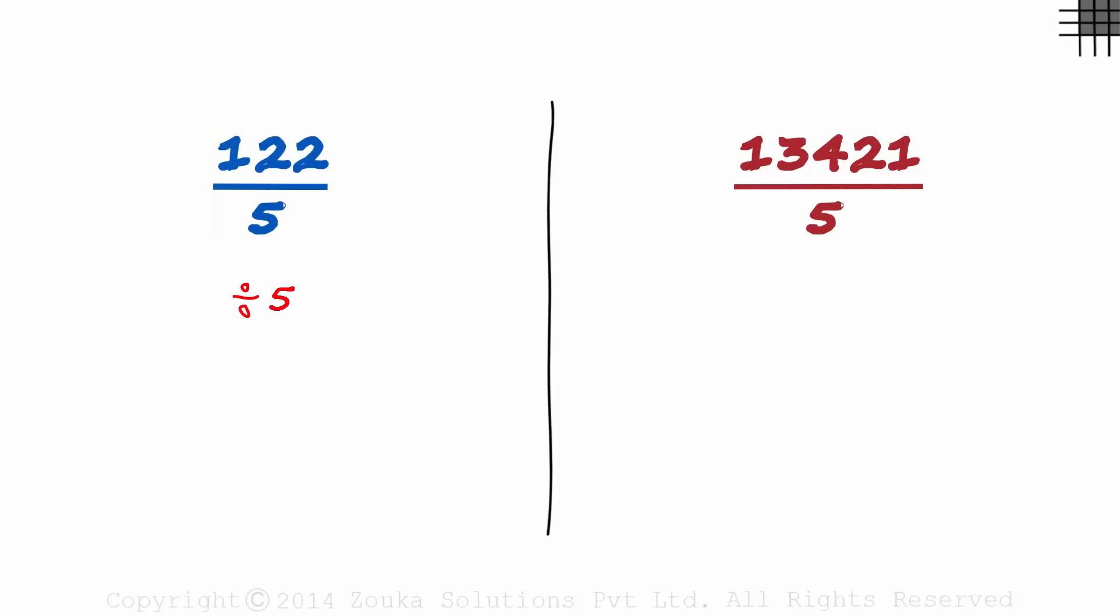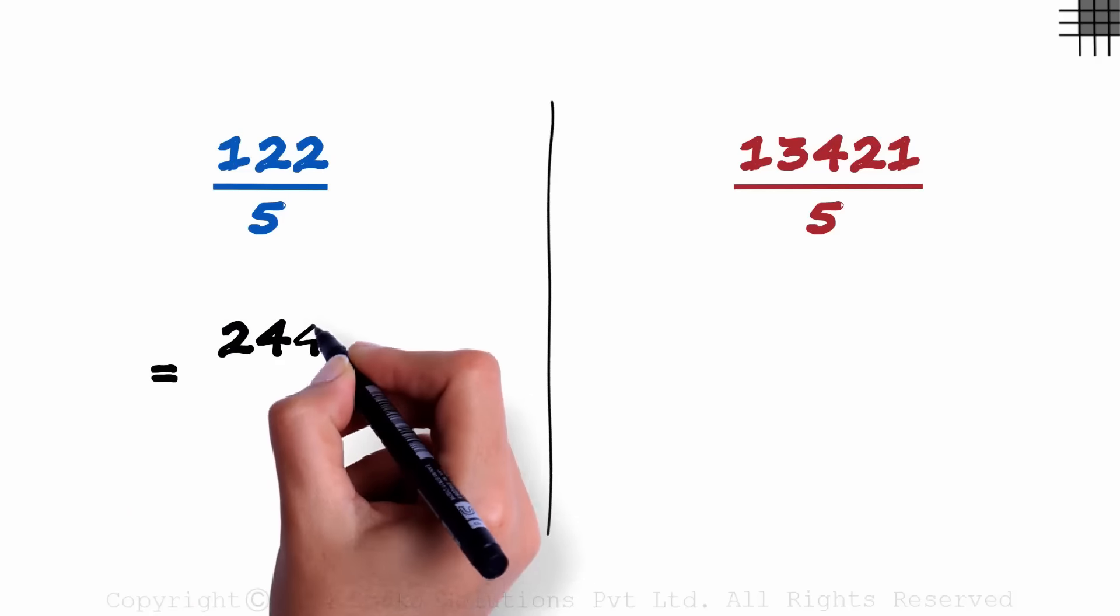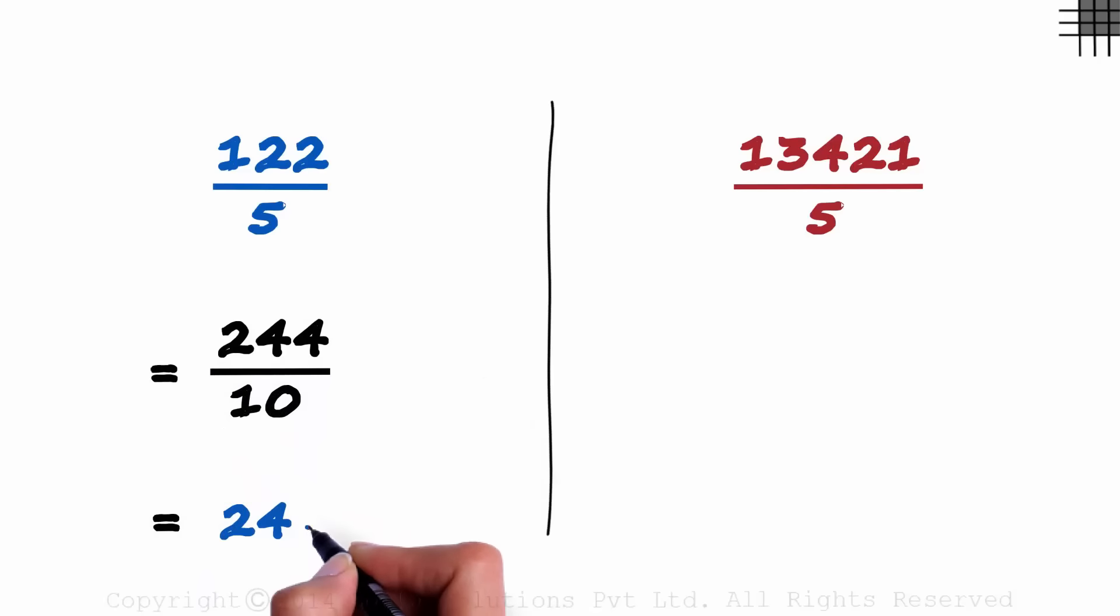Divided by 5 is the same as multiplying it with 2 and dividing it by 10. So 122 times 2 is 244, and we divide it by 10. This is 24.4. Try the next one.